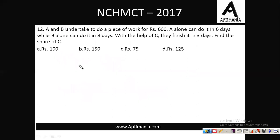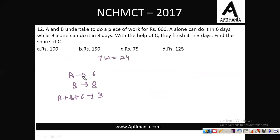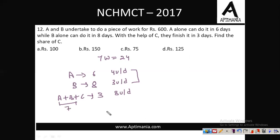Question number 12: A and B undertake a piece of work for 600 rupees. A alone can do it in 6 days, B alone in 8 days. With the help of C, all three complete the work in 3 days. Find the share of C. Assuming total work = 24 units (LCM of 6, 8, 3): A does 4 units/day, B does 3 units/day. All three together do 8 units/day. So C does 8 − 4 − 3 = 1 unit per day.